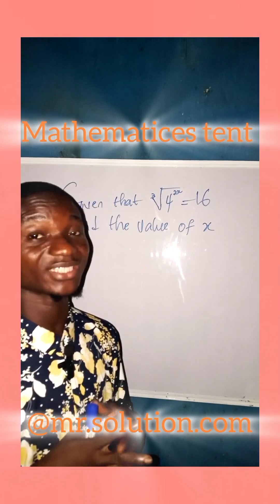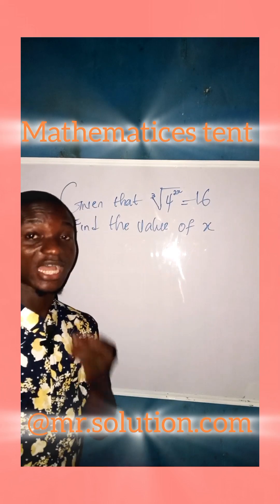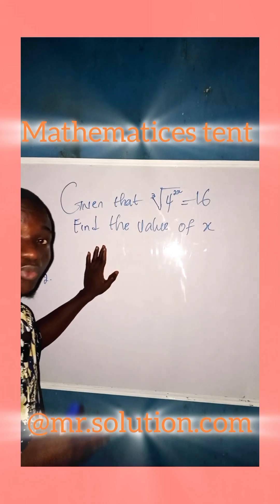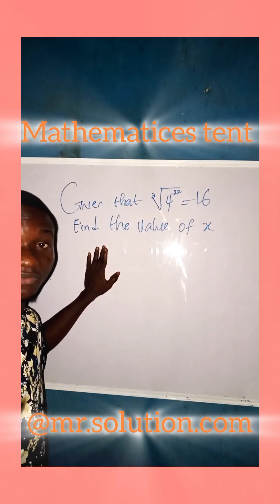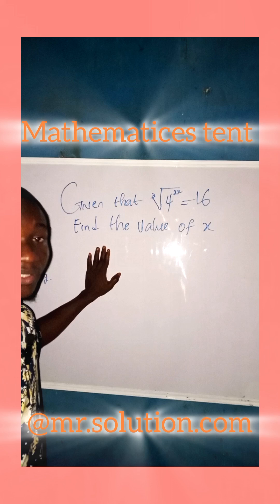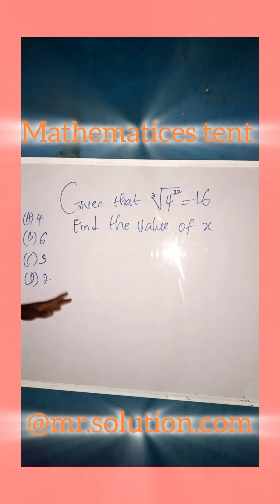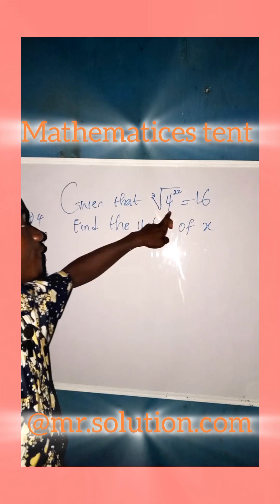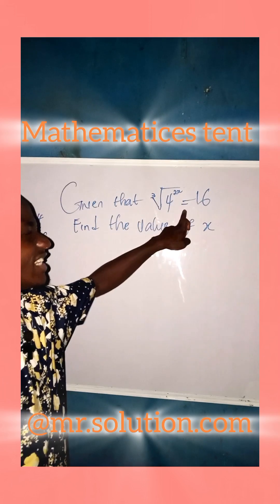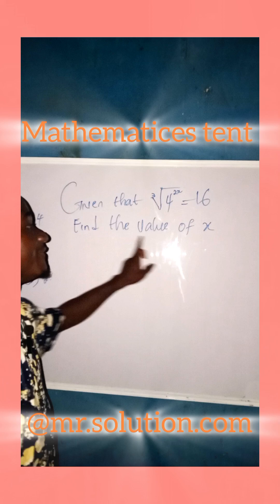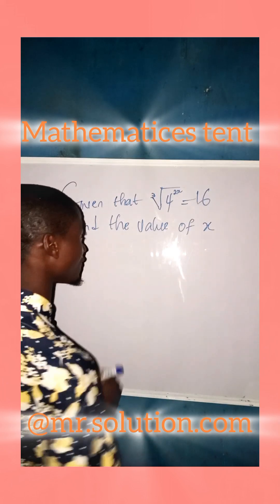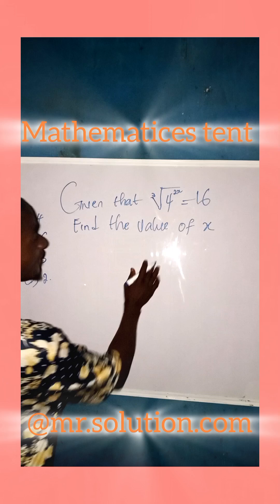This is one of the awesome questions in indices and it's very simple. I'm going to show you how it is simple. Now we are asked to solve: given that the cube root of 4 raised to the power 2x equals 16, find the value of x. We are going to solve this in seconds — just follow step by step.